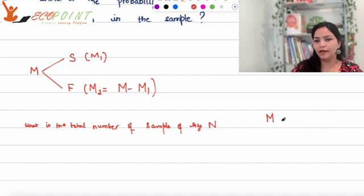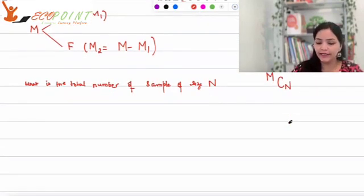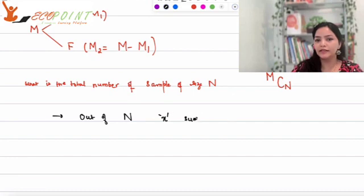What is the total number of samples that you can take out of size N? If the population is capital M, then I can take out M choose N number of samples, of all of size N, right? Out of which I want x successes. Out of N, we want x successes. Therefore, automatically since the total that I'm taking out is capital N and if I'm only interested in x successes, then the remaining will definitely be failures.